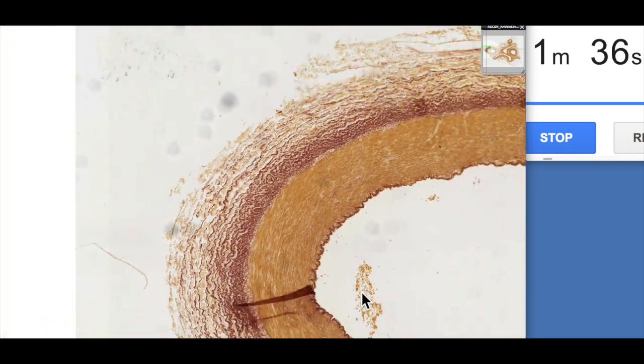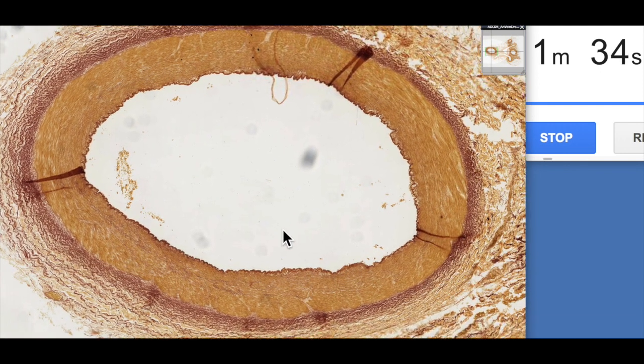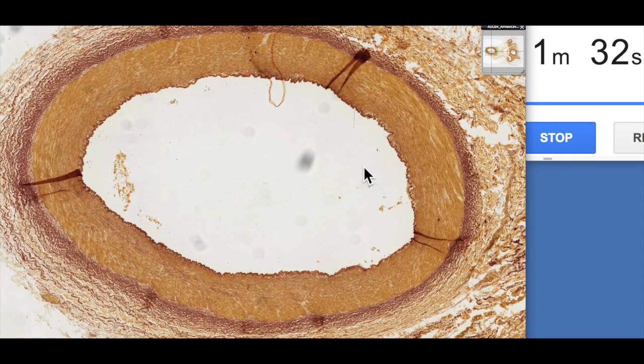If we sort of zoom out, we can see a real characteristic feature of arteries is that it's typically regular in appearance and shape. It's got a very thick wall with a very thick tunica media.